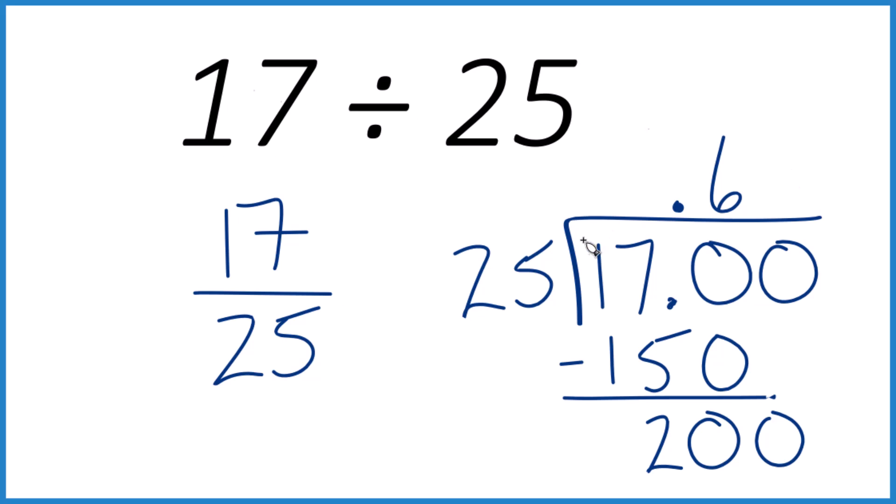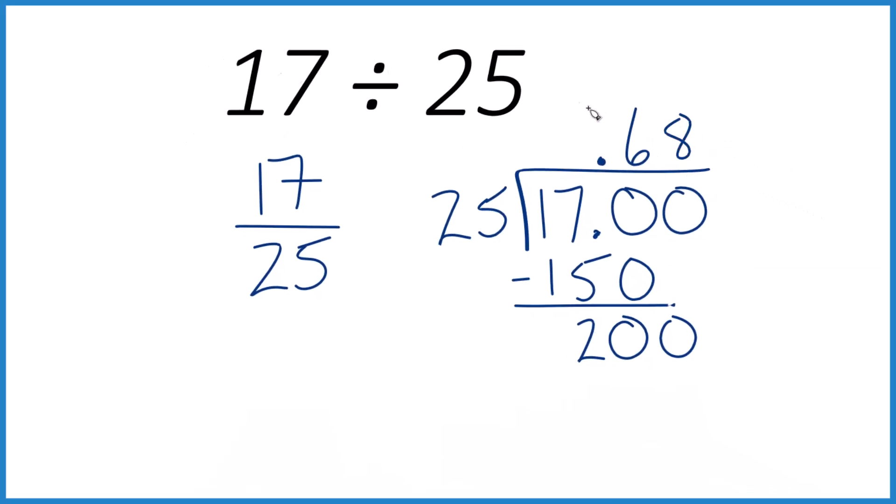So 4 times 25 is 100, so 8 times 25, that's 200, which is nice because we subtract. No remainder, and that's it.